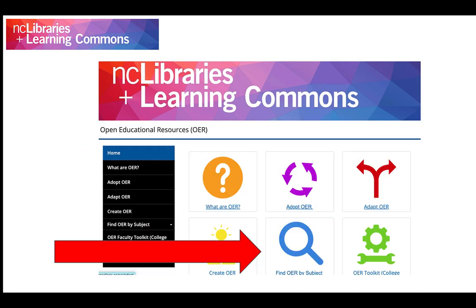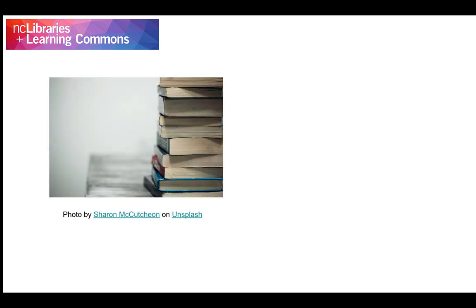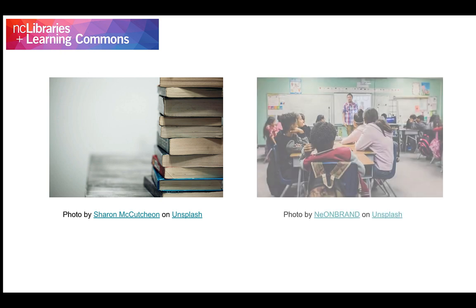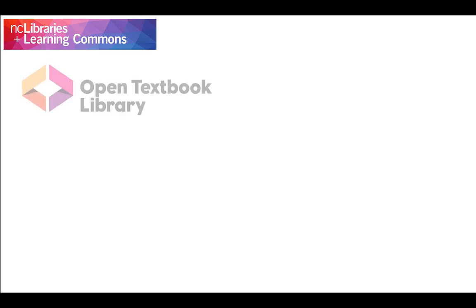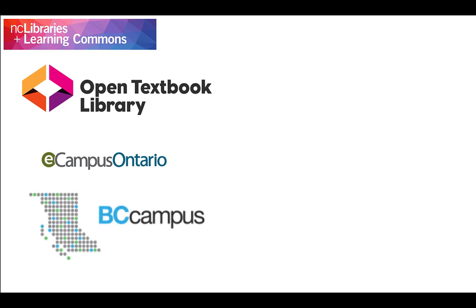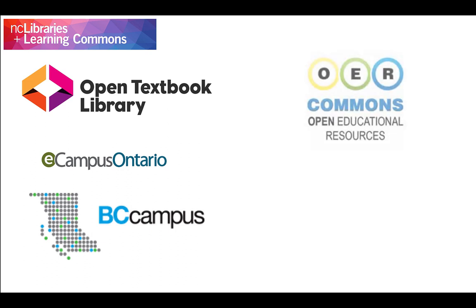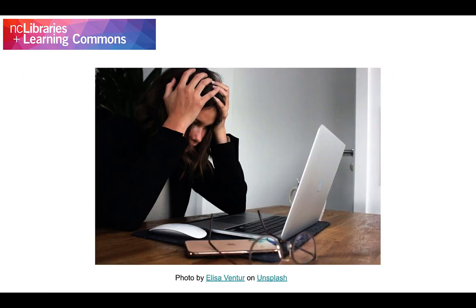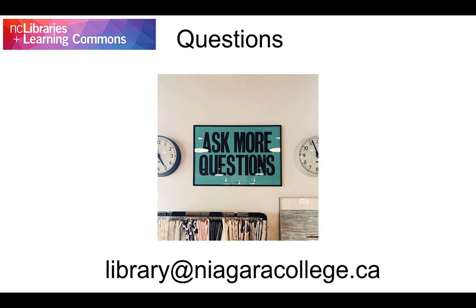Then click Find OER by Subject for a list of relevant OER repositories. Generally, there are repositories that help you find textbooks and repositories that help you find teaching materials. If you are interested in OER textbooks, you might want to consult the Open Textbook Library, eCampus Ontario, or BC Campus Open Education for Canadian content. If you are interested in supplementary teaching OER, you may want to consult OER Commons or Merlot. If you try these resources and still can't find what you are looking for, don't despair — contact NC Libraries and we can help you expand your search.